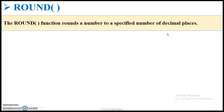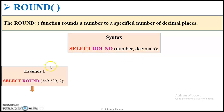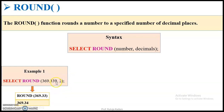Then comes the round function. Round is similar to the rounding off we use in day-to-day life. It rounds a number to a specified number of decimal places. There are two parameters: number and decimals. The syntax is: SELECT ROUND(number, decimals). For example, SELECT ROUND(369.339, 2) — we consider only two decimal places, giving 3 and 3, and the next digit is 9, which is greater than 5, so the second decimal rounds up to 4. The output is 369.34.